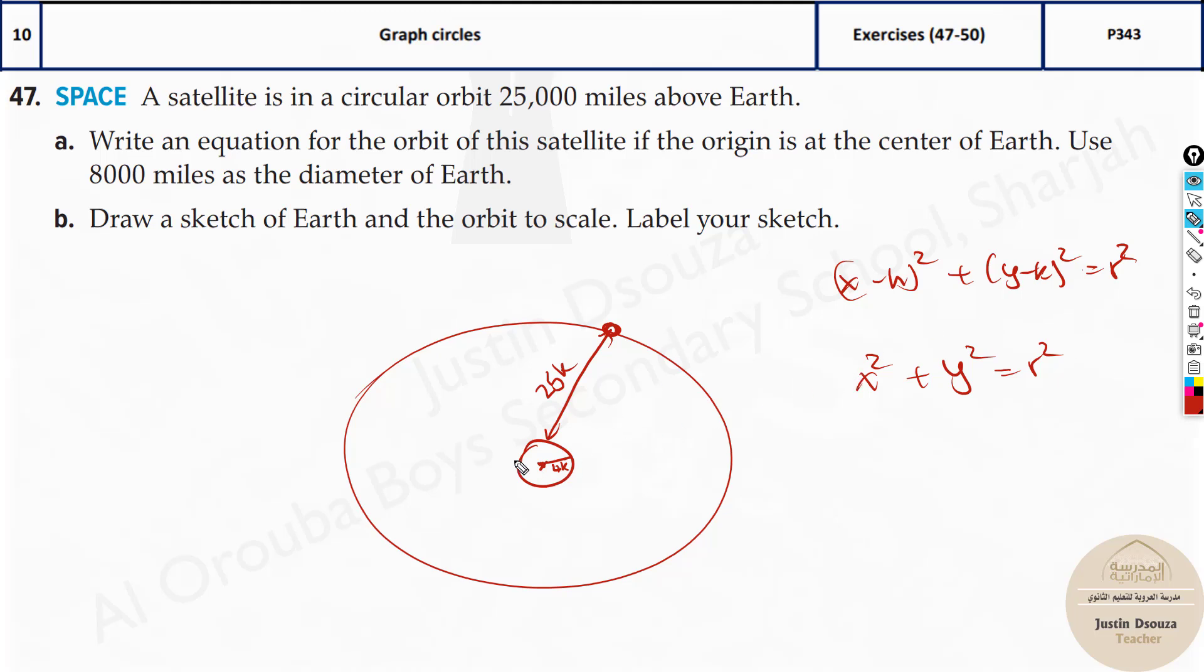But what is the radius now? From here to here it is 4. This is also 4. And then we have 25,000. So 4,000 plus 25,000 would be 29,000 square. We have to square this up and then we have x squared plus y squared. Just put this in the calculator and you will get the answer. The equation would be for the part A of this question.